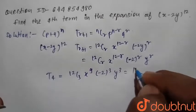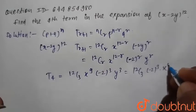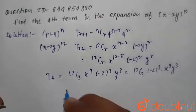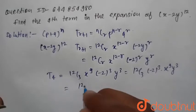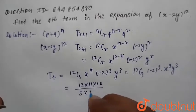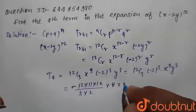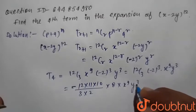This can be written as 12C3 × (-2)^3 × x^9 × y^3. Now 12C3 = (12 × 11 × 10)/(3 × 2 × 1), and (-2)^3 = -8, giving us -8 × 12C3 × x^9 × y^3.